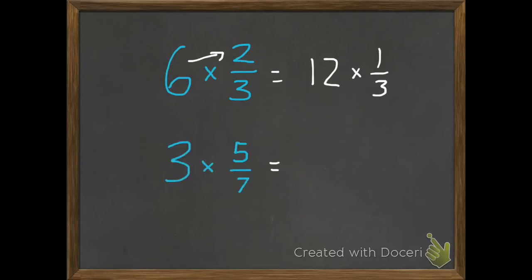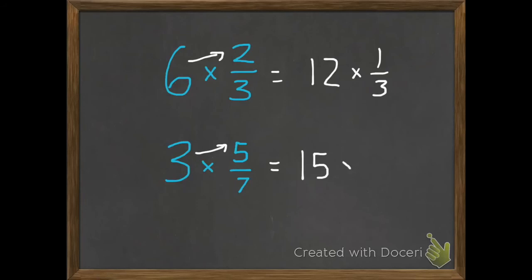I want you to try this one. How could we write 3 times 5 sevenths? Remember, we don't change our denominator — we're just going to multiply that top part times our 3. So what is 3 times 5? It's 15. And what kind of fraction are we using? We're using sevenths. So we have 15 times 1 seventh.